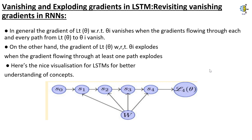Revisiting vanishing gradients in RNNs. In general, the gradient of LT with respect to theta_i vanishes when the gradients flowing through each and every path from LT to theta_i vanish. On the other hand, the gradient of LT with respect to theta_i explodes when the gradient flowing through at least one path explodes. Here is a nice visualization for LSTMs for better understanding of the concept.